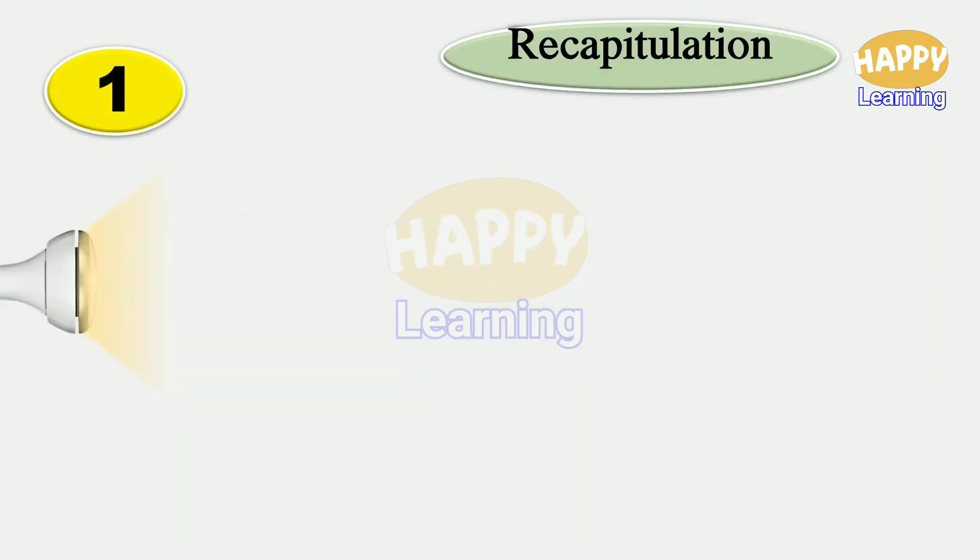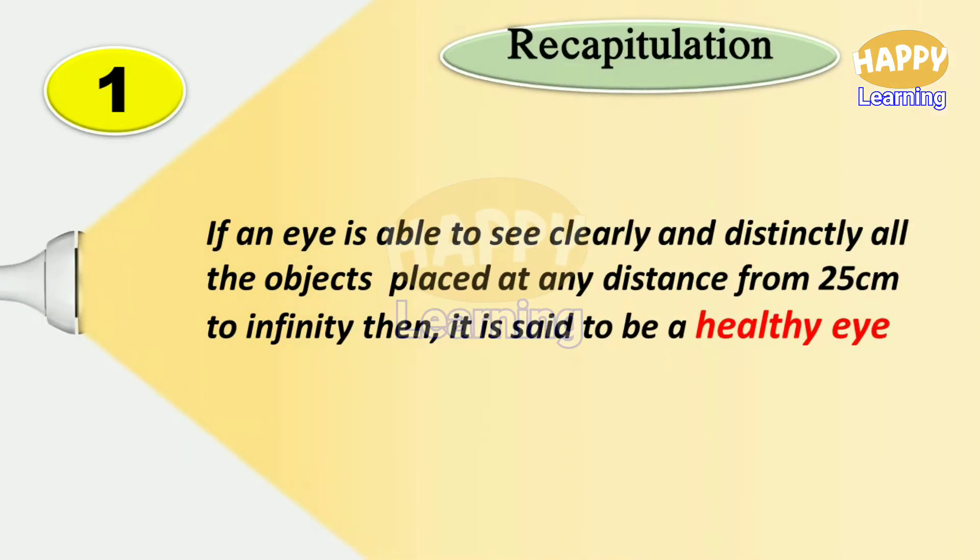Recapitulation: If an eye is able to see clearly and distinctly all the objects placed at any distance from 25 centimeter to infinity, then it is said to be a healthy eye.